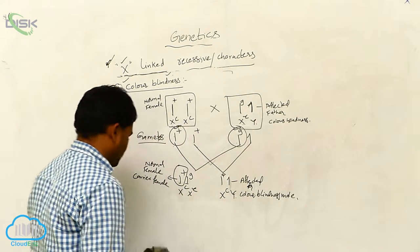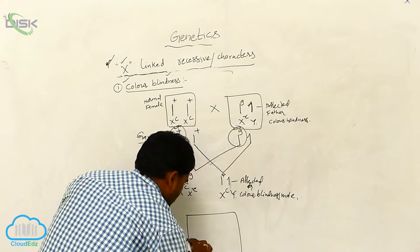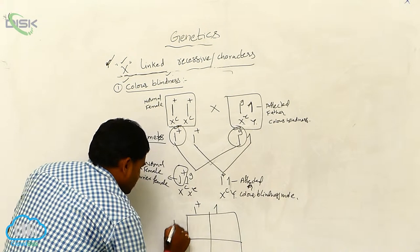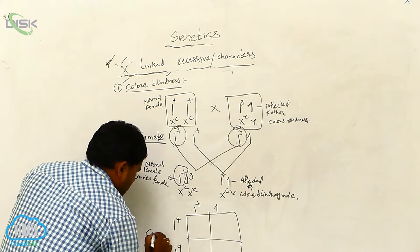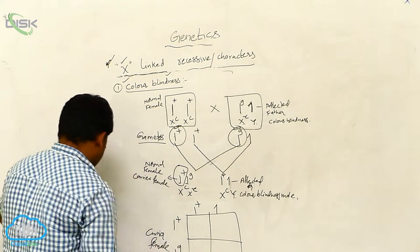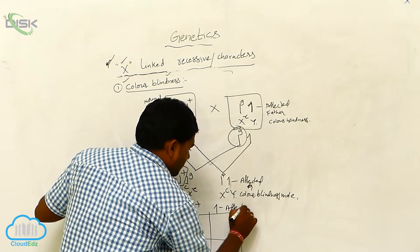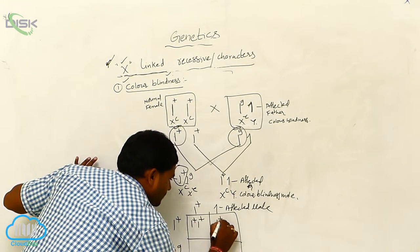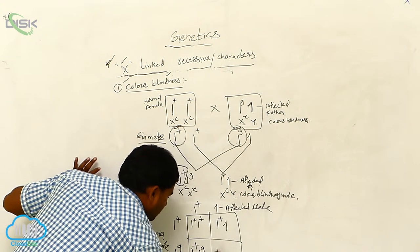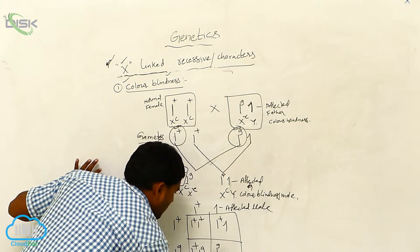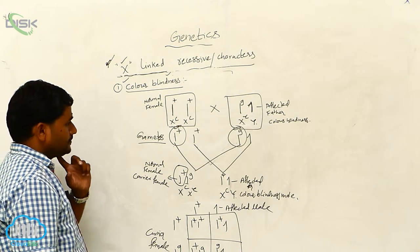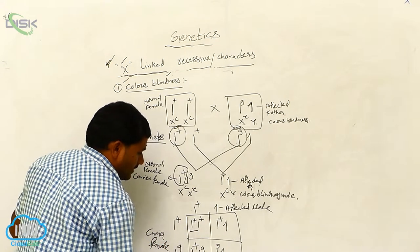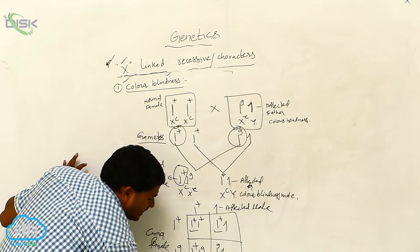Let us draw another diagram. Here affected father and carrier female. This is carrier female and this is affected male. See generally: this is normal female, this is normal male, and one recessive allele is there — this is called as carrier female. This is affected male.